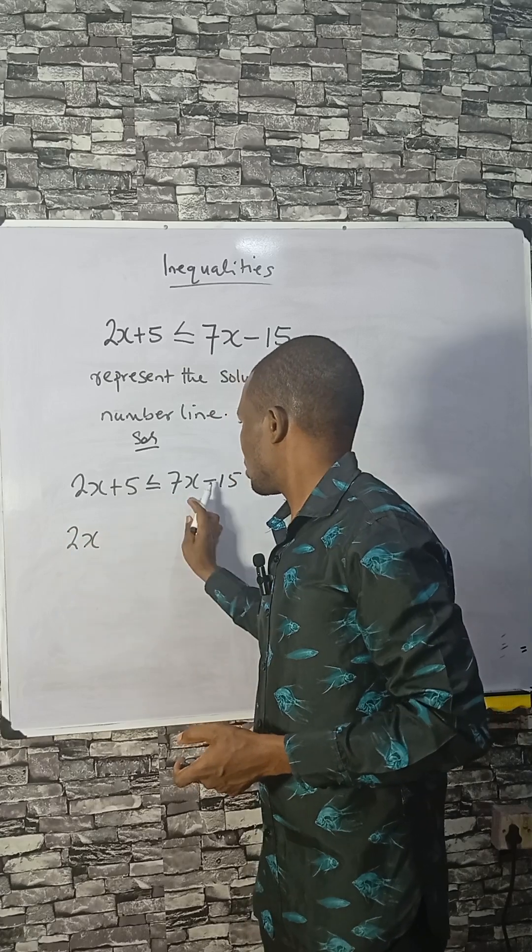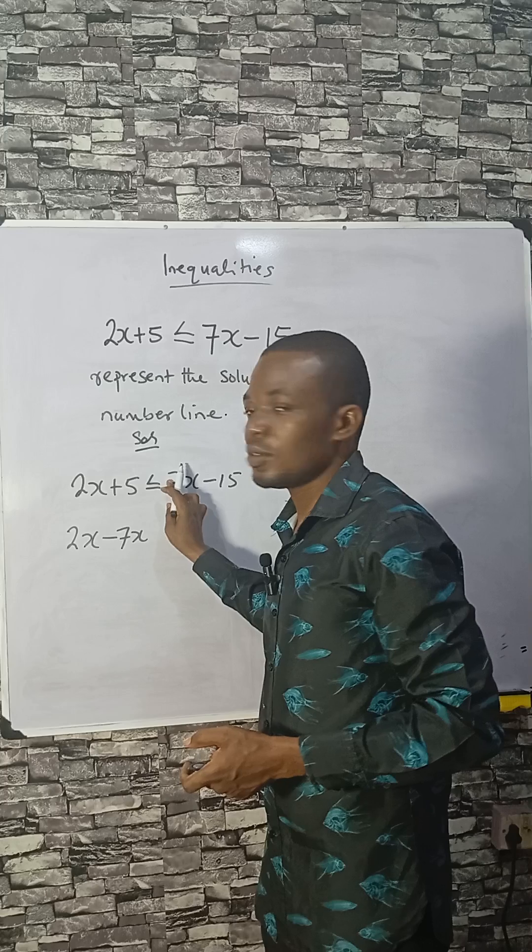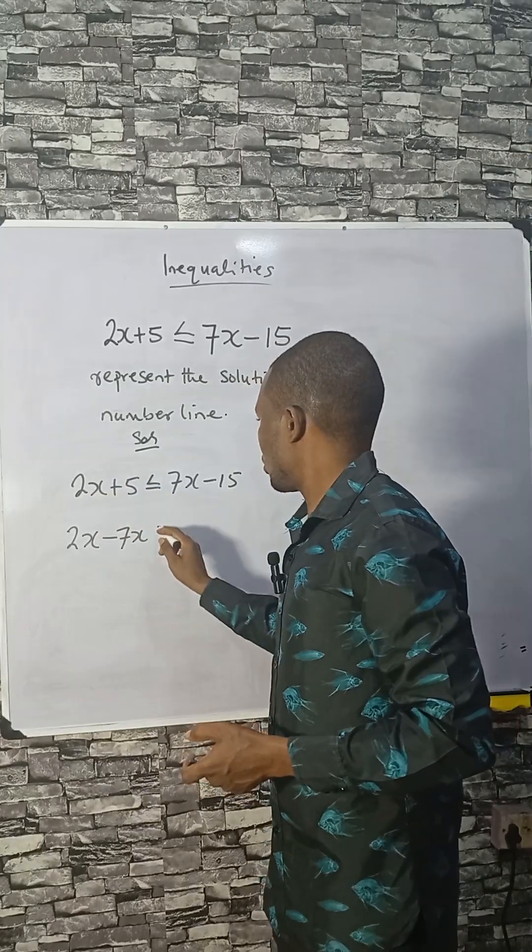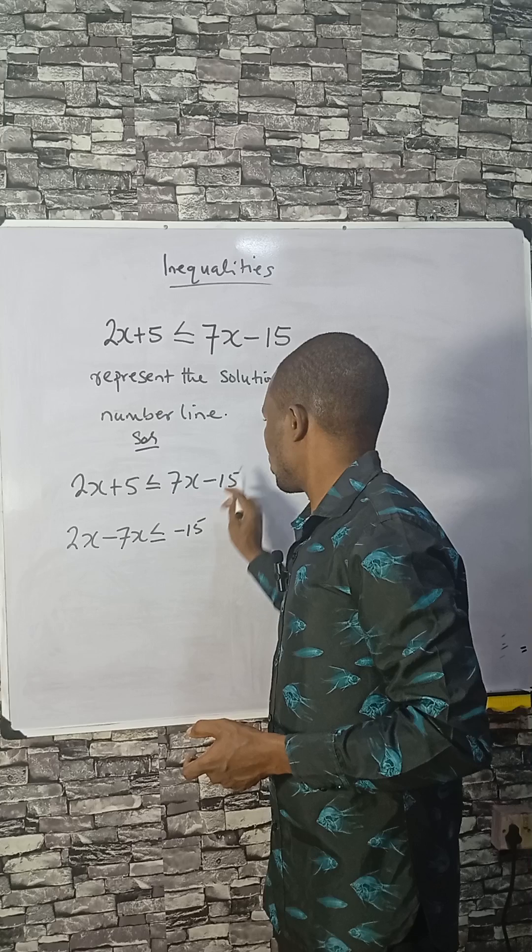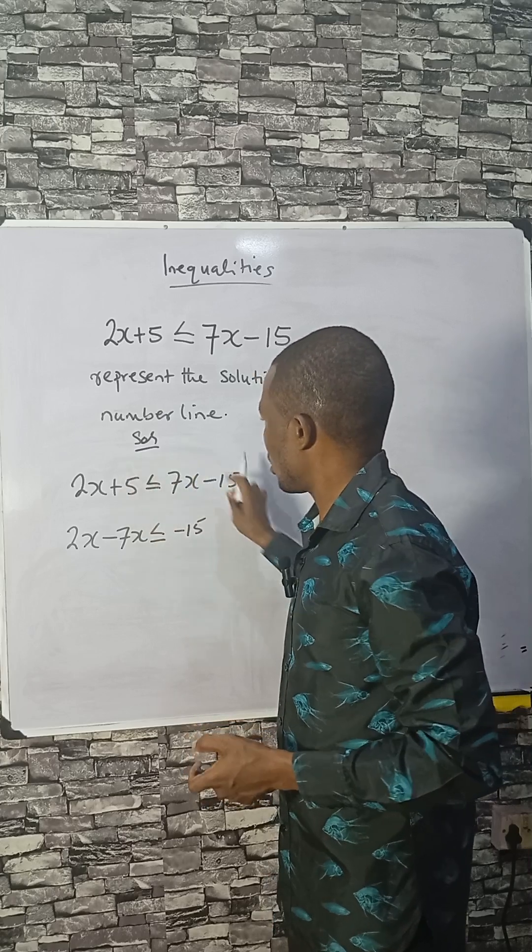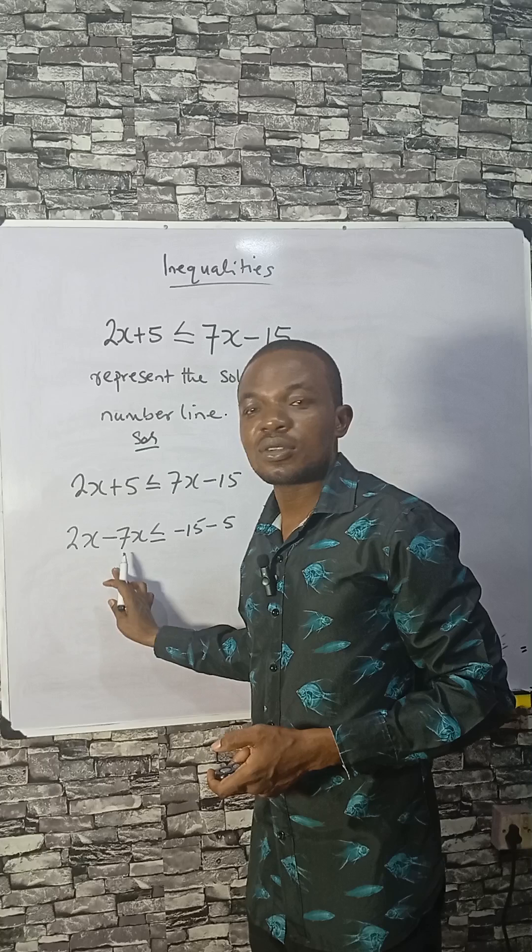Collect like terms. We move 7x to the left side, so it becomes minus 7x since it's positive on the right. The -15 stays on the right, and +5 crosses over to become -5. This gives us 2x - 7x ≤ -15 - 5, which simplifies to -5x ≤ -20.